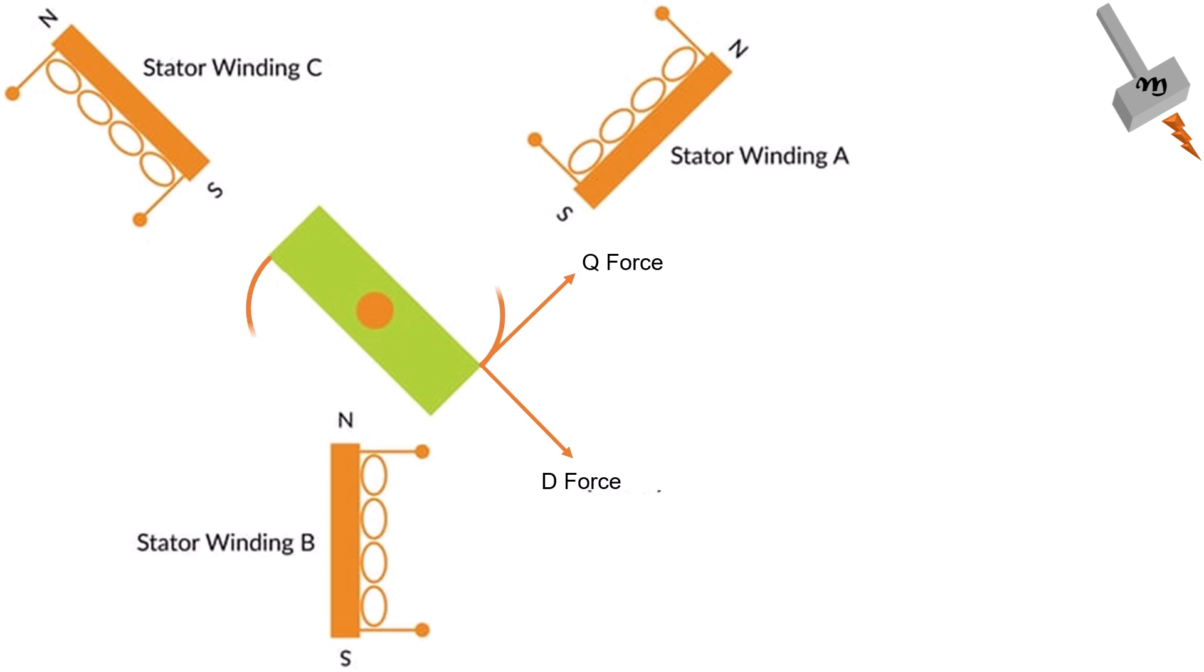These two components are controlled independently, allowing for more accurate and dynamic control of the motor. The D-axis current component represents the magnetizing current, while the Q-axis component represents the current responsible for generating torque. By controlling these components separately, vector control maximizes the torque production and optimizes the motor's performance across a wide range of speeds.